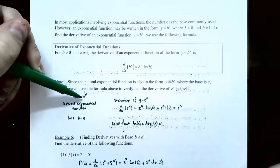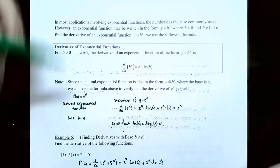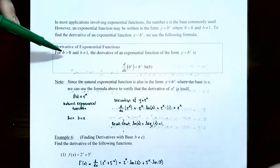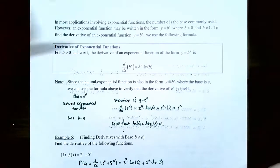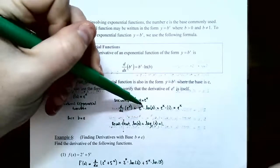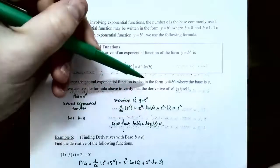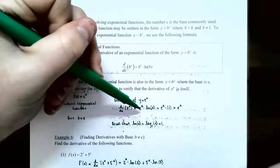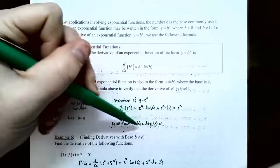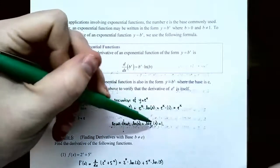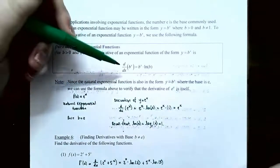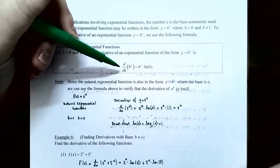To verify: if f of x equals e to the x, the base b equals e. Since e is positive and not 1, the formula gives the derivative as e to the x times natural log of e. Since natural log means log base e, log base e of e equals 1 because e to the first power is e. So the formula works for any exponential function, including base e.